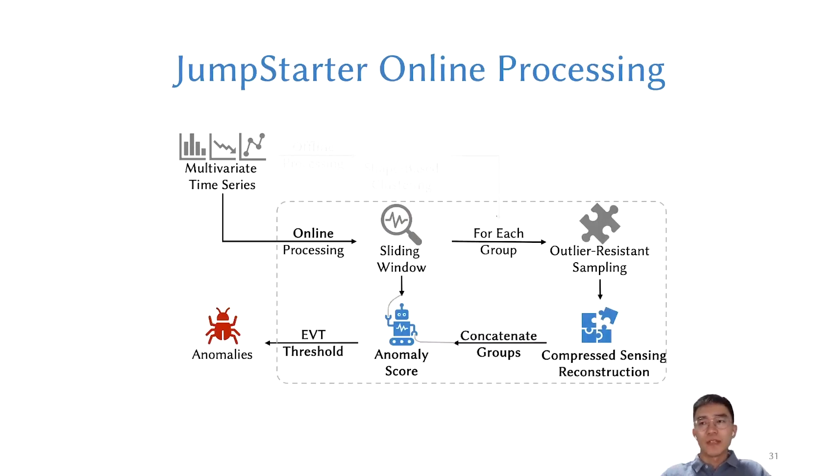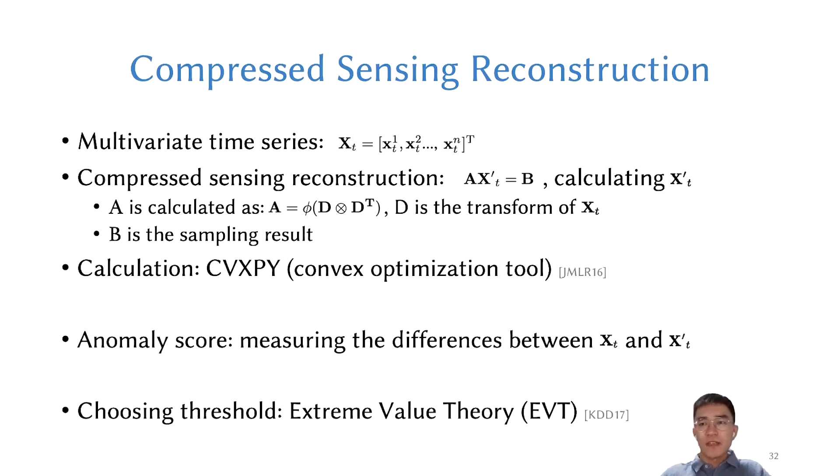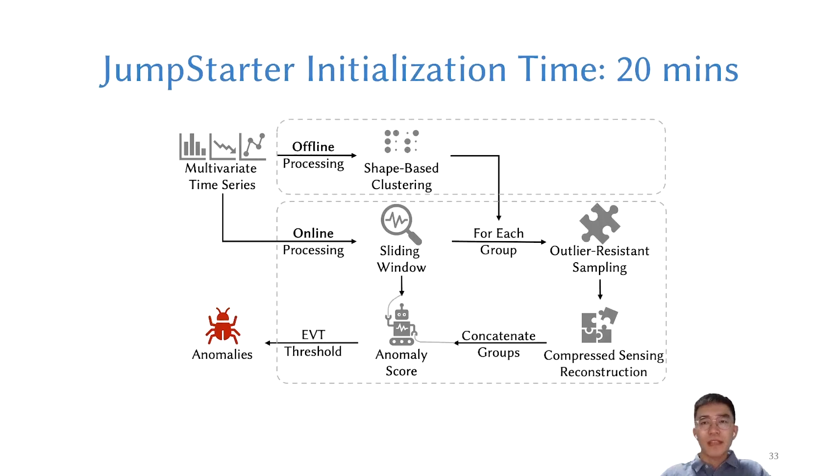Next, we apply compressed sensing to reconstruct each group of time series. After that, we can concatenate these reconstructed time series, measure the difference between the original and reconstructed MTS as an anomaly score, and detect anomalies using a threshold against the anomaly score. From compressed sensing reconstruction, I will not explain too much detail about this. We use a convex optimization tool for the calculation. We designed a calculation of anomaly score also based on domain-specific insights. It tends to be effective in different datasets. For choosing a threshold, we use extreme value theory. This is our approach, JumpStarter. We can set the initialization time as short as 20 minutes with a high detection accuracy.